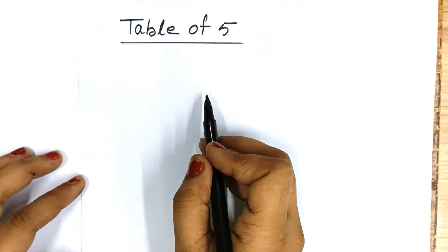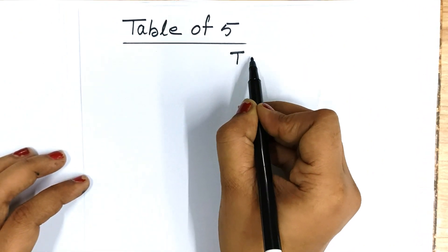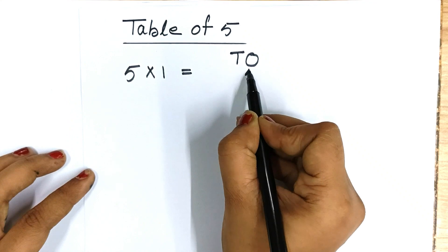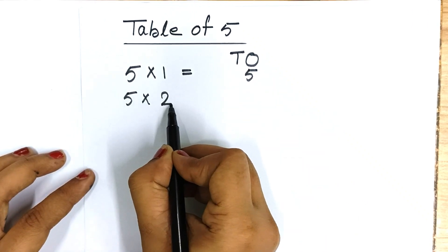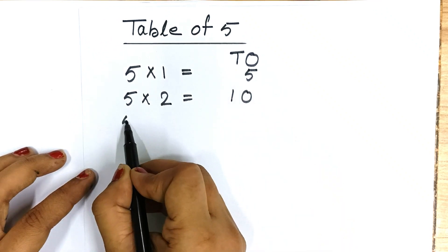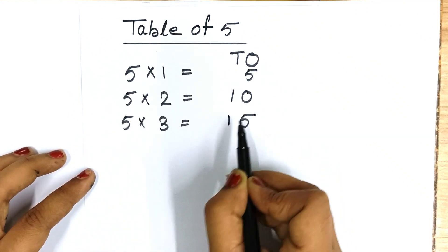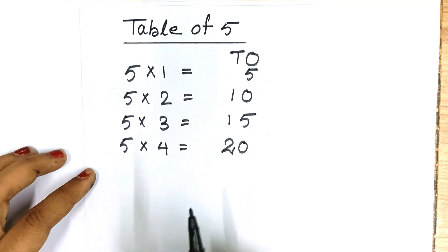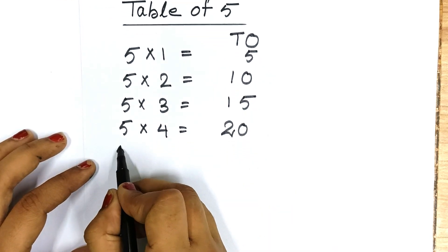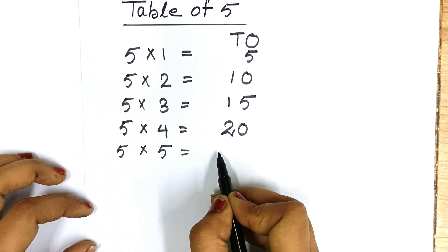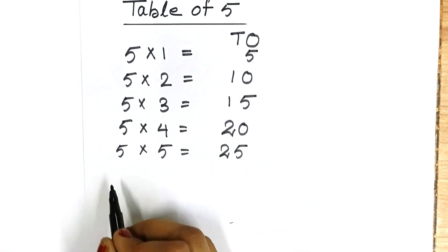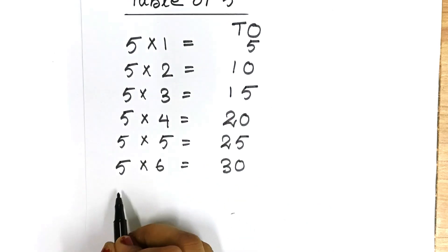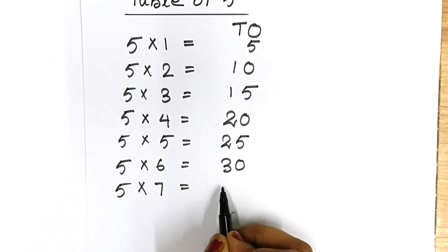Let's start writing table of five. First write T.O. here. Five one is five. Five two are ten. Five three are fifteen. Five four are twenty. Five five are twenty-five. Five six are thirty. Five seven are thirty-five.